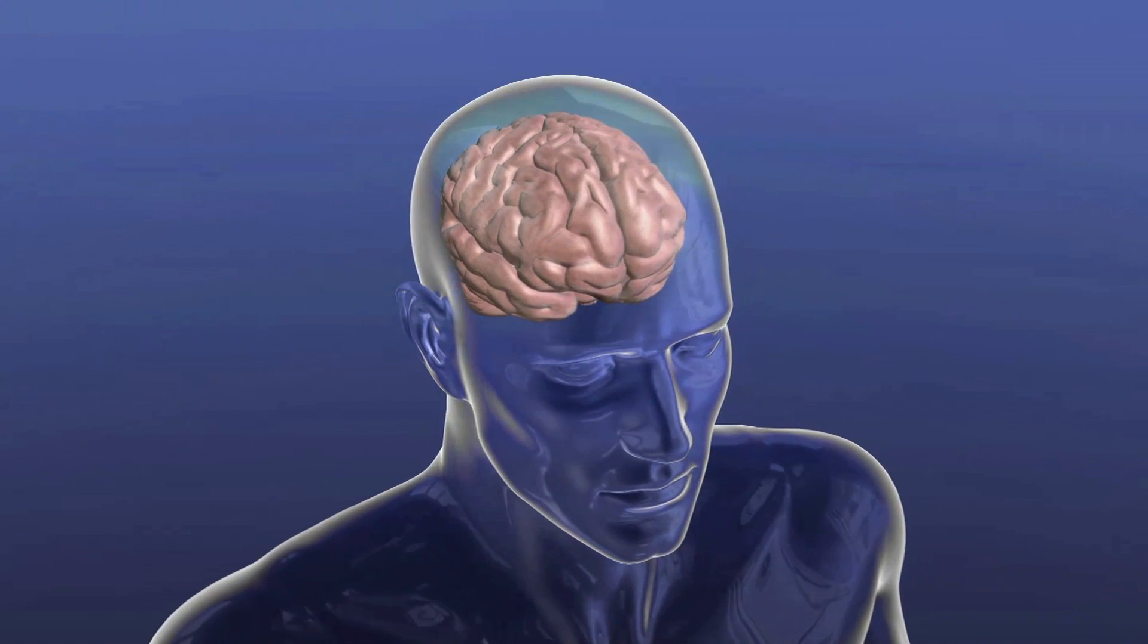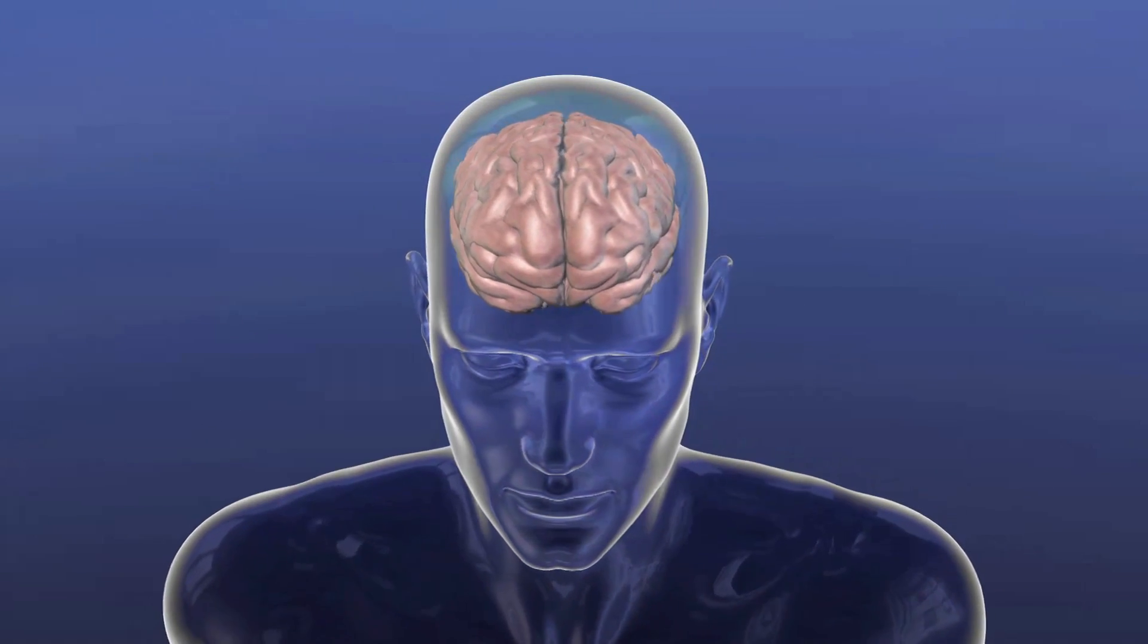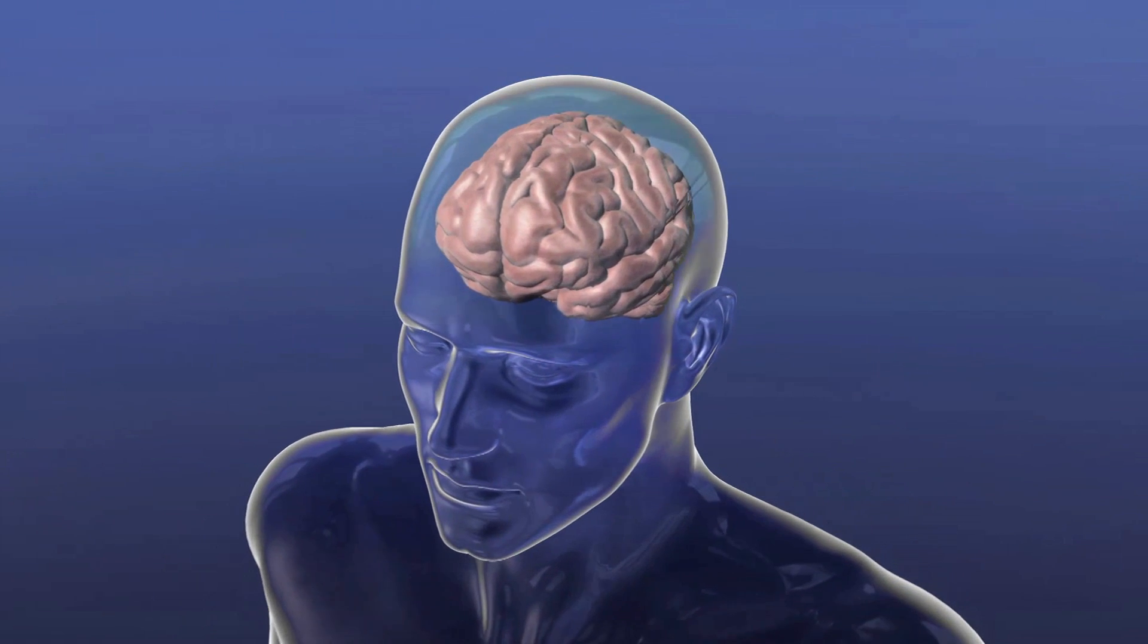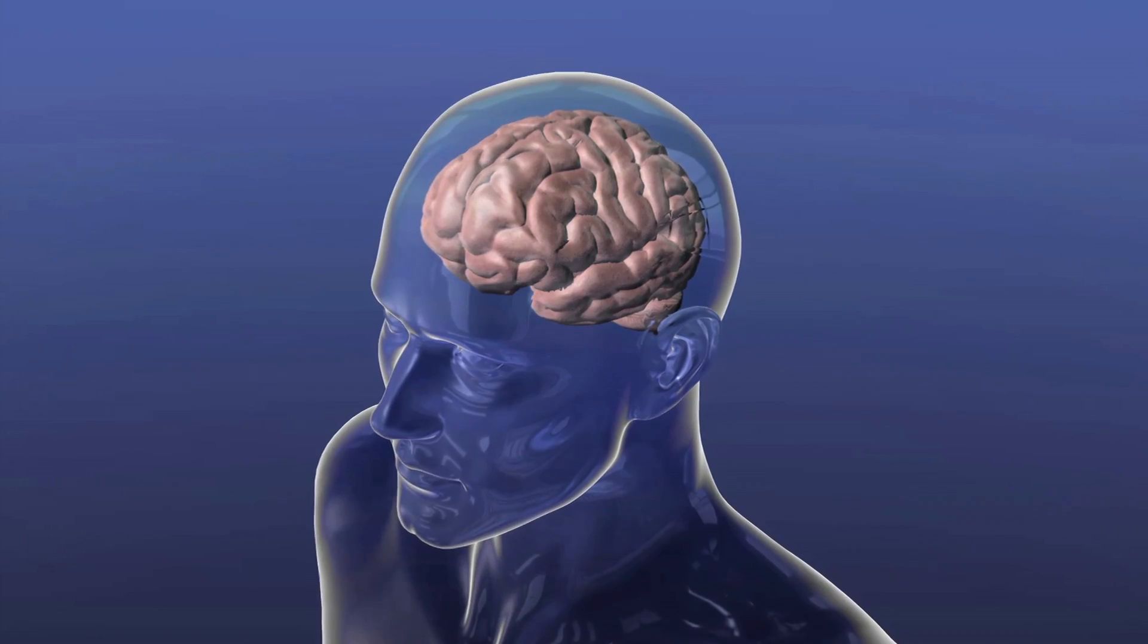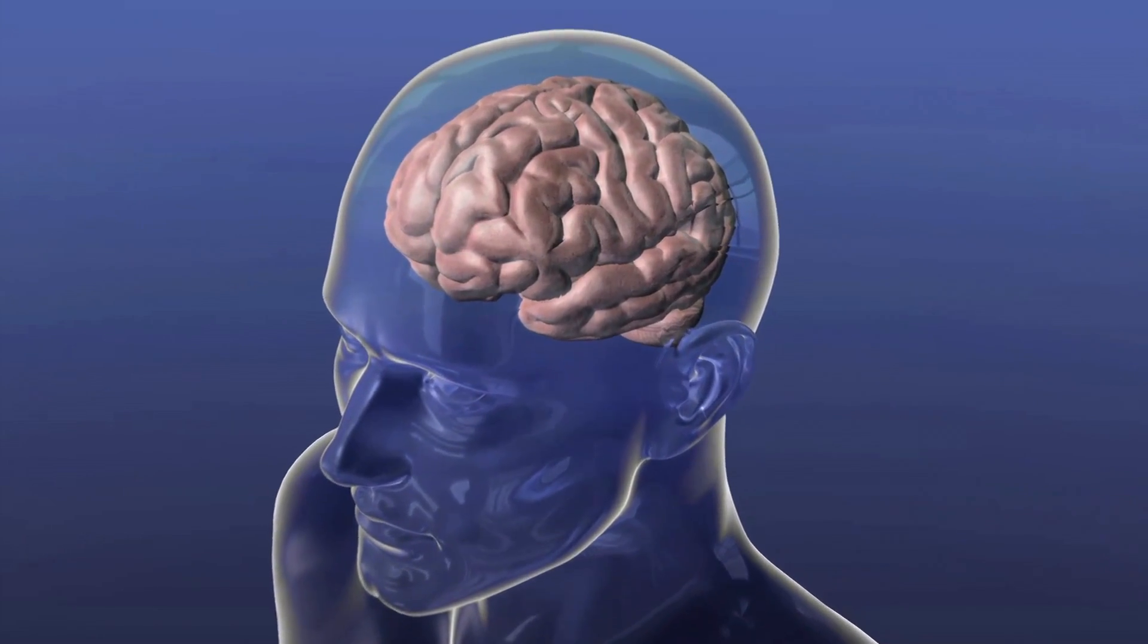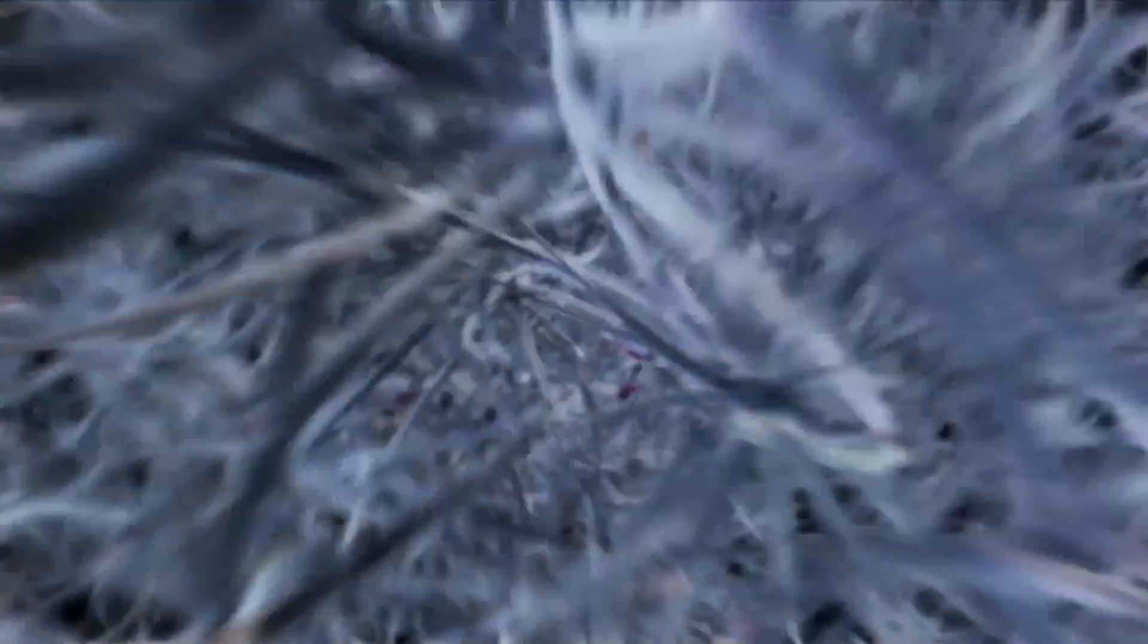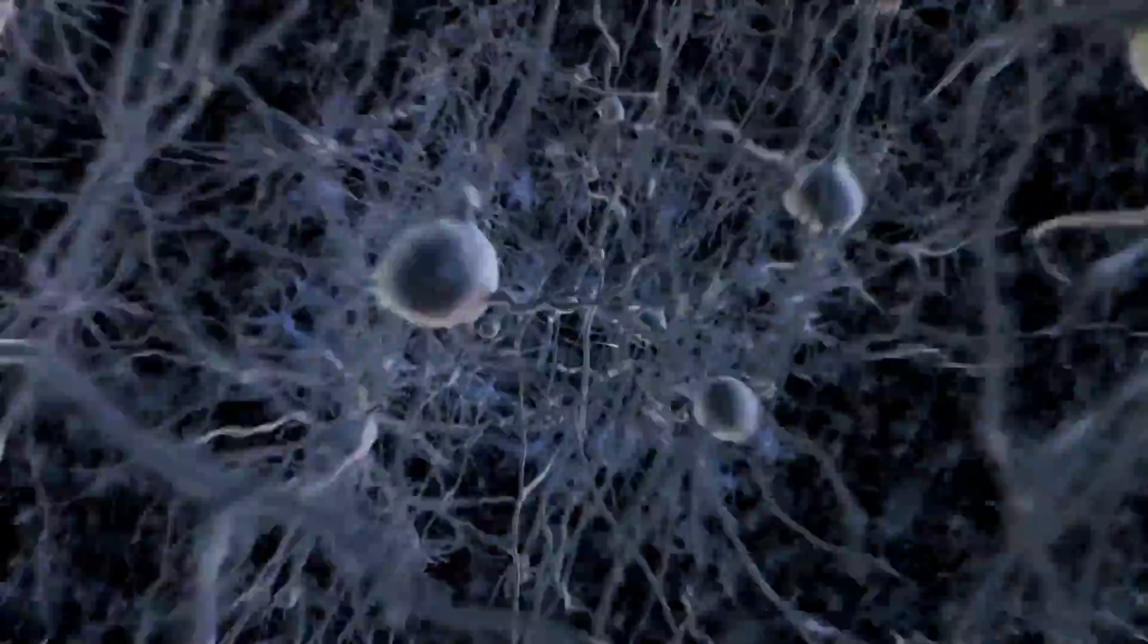The human brain may not look like much, a couple of pounds of pink, wrinkled tissue, but the last hundred years of neuroscience have shown that the brain is an incredibly densely wired computer made out of hundreds of billions of individual cells, called neurons.